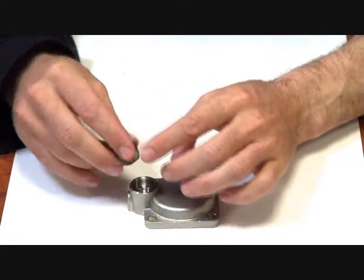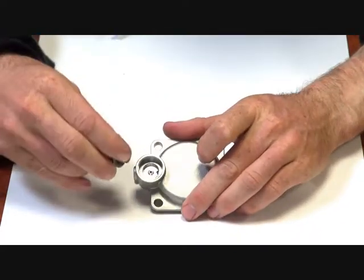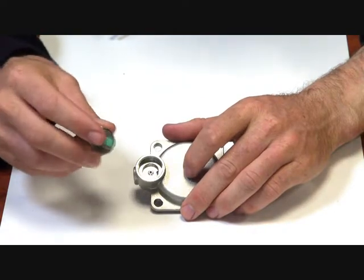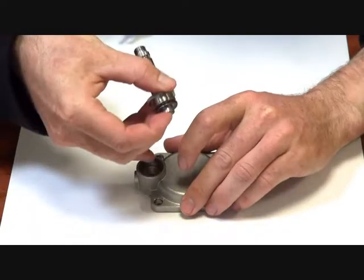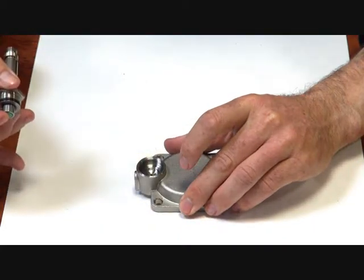Now this armature here, sits on the little jet in there. Now that sits closed. When you put power to it, just lift it up, lifts off that jet, and pressure can bleed off the top of the diaphragm.